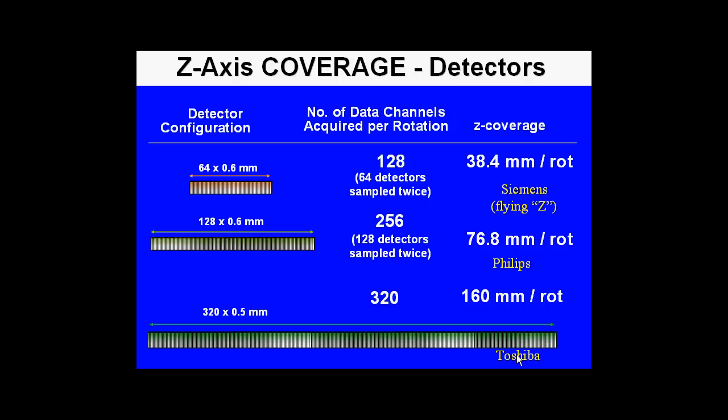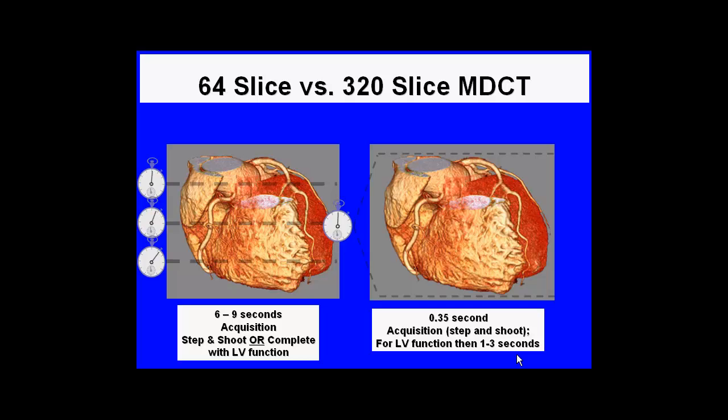For these newer detectors, z-axis coverage is listed in this group. For the Siemens scanner, it's 128 samples — 64 detectors sampled twice — but using two individual cameras. Philips has produced a 256-slice scanner, and Toshiba has produced a 320-slice scanner.